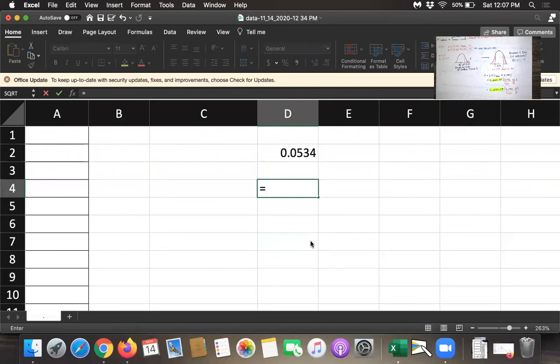or we could do the right tail and we can multiply it by 2. So I'll do 2 times t.dist.rt for right tail and then we'll do 2.142 for our test statistic and 12 here and we get exactly the same answer.